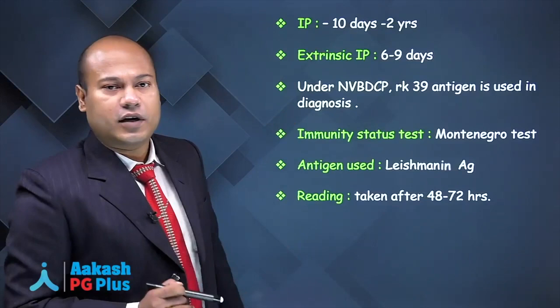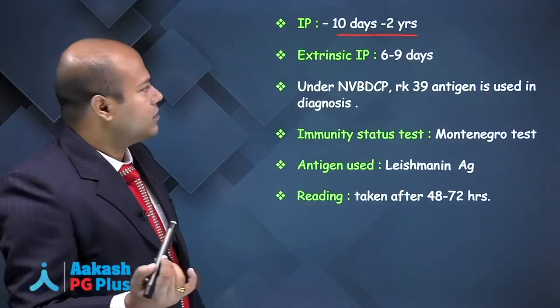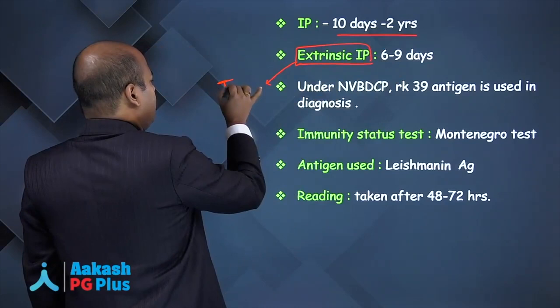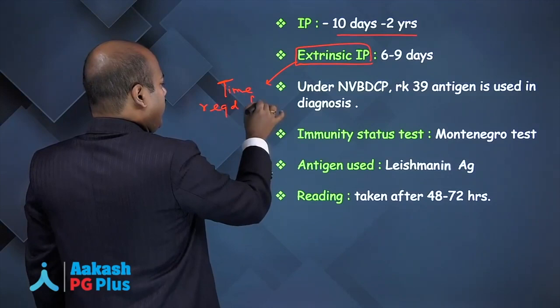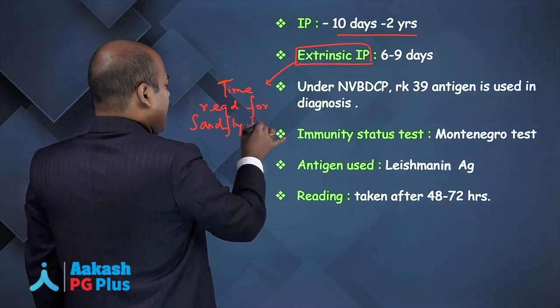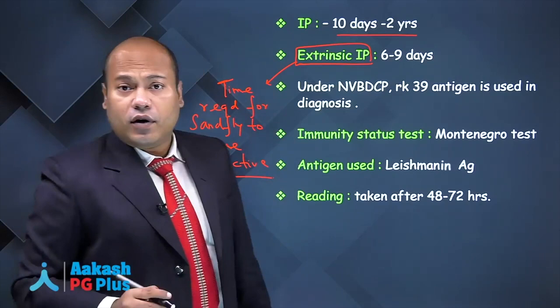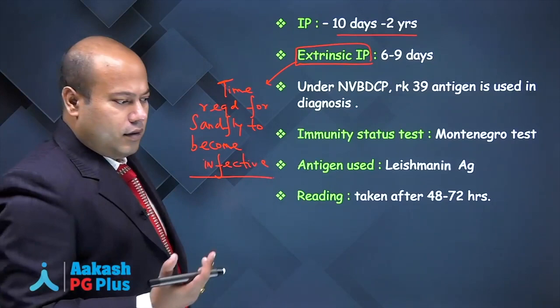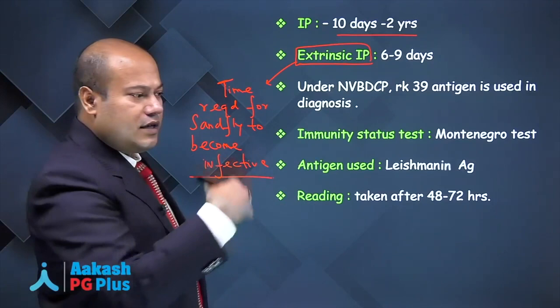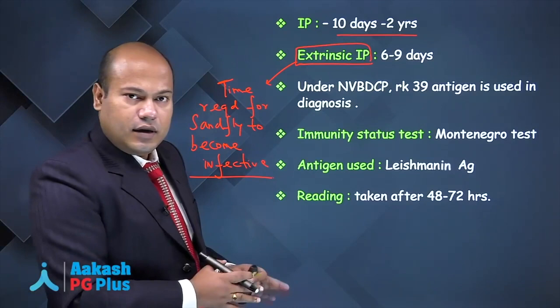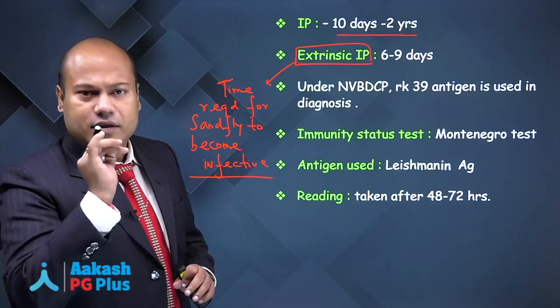The incubation period for Kalazar is 10 days to 2 years — a huge range. The extrinsic incubation period is the time required for the sandfly to become infective. When a non-infected sandfly sucks blood from an infected human, it takes in amastigotes; inside the sandfly, amastigotes convert to promastigotes. This time taken — the extrinsic incubation period — is 6 to 9 days.